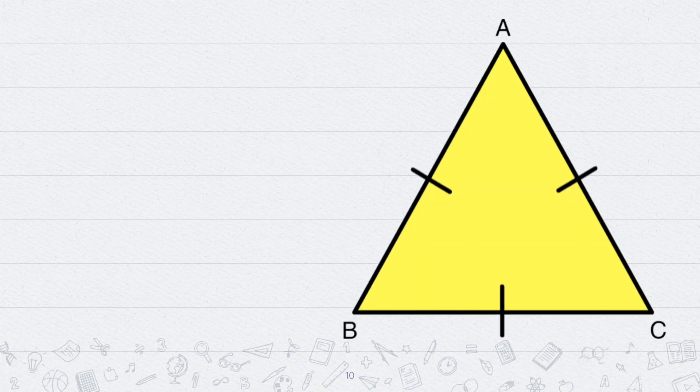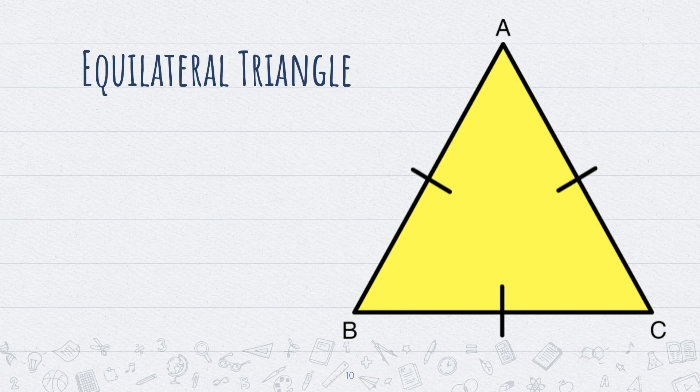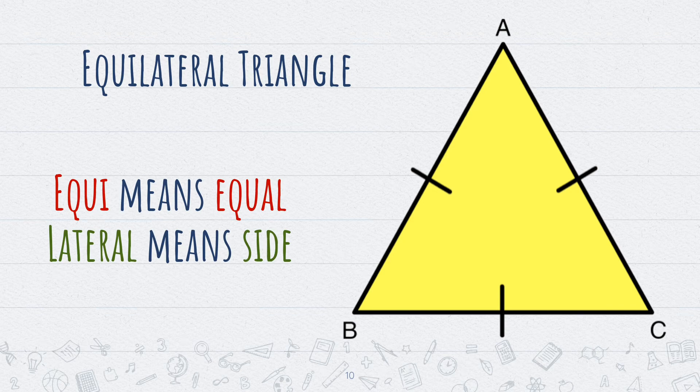Look at this triangle. All the sides of this triangle are equal. Such a triangle is called an equilateral triangle. Equi means equal and lateral means side.